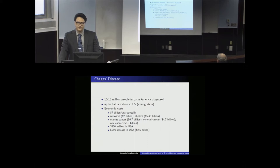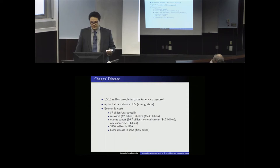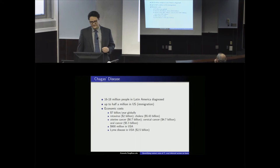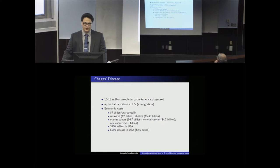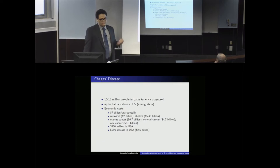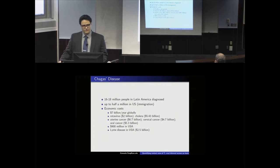Chagas disease is a major problem in Latin America — about 16 to 18 million people have been diagnosed. In the US it's not a problem yet, although it's been estimated that up to half a million people in the US do have it, many migrating from Latin America or living in Texas near the Mexican border. Globally, Chagas disease has about a seven billion dollar economic burden, roughly comparable to rotavirus and cholera combined.